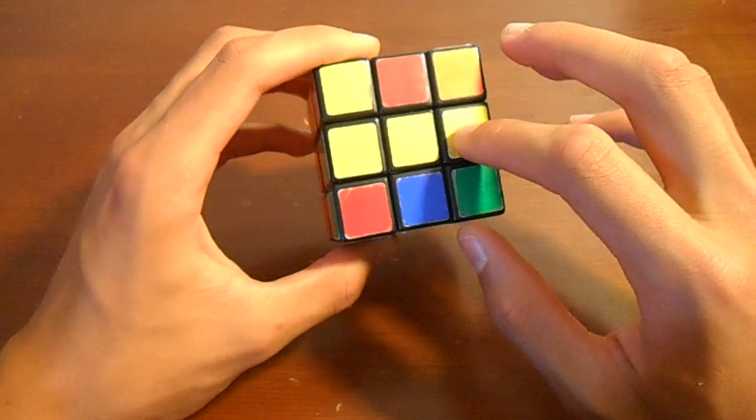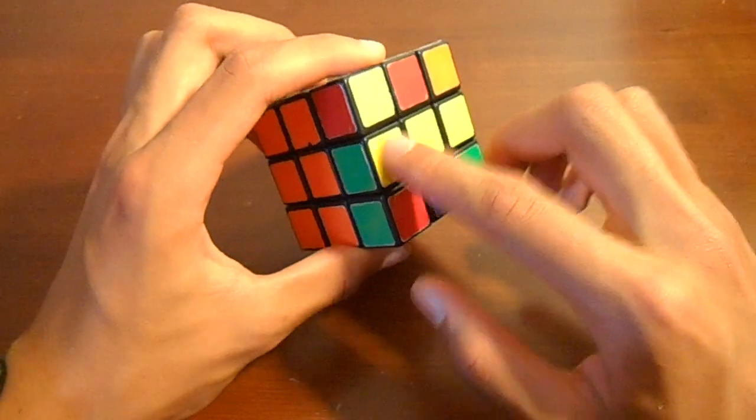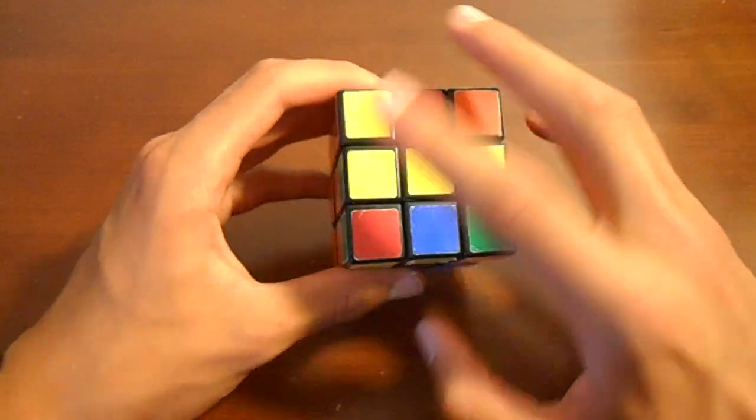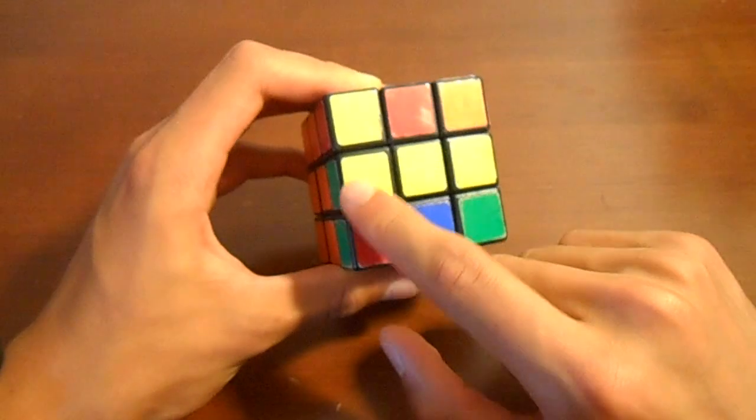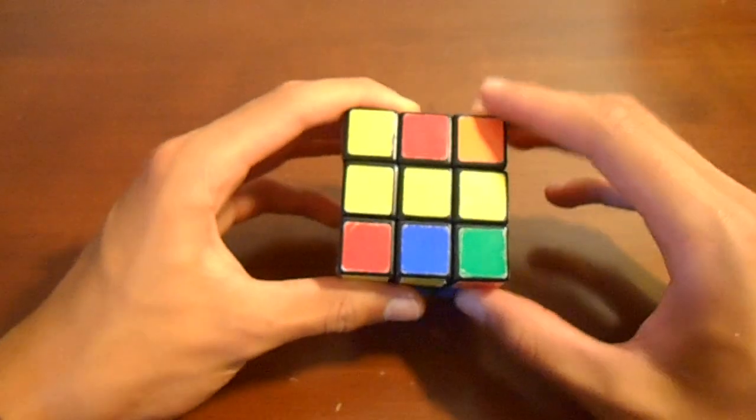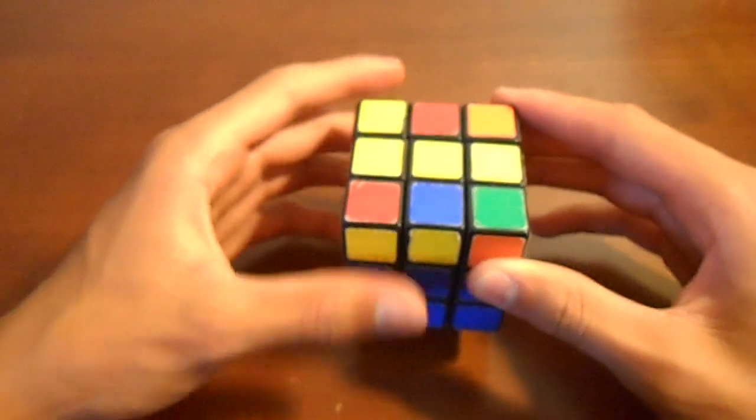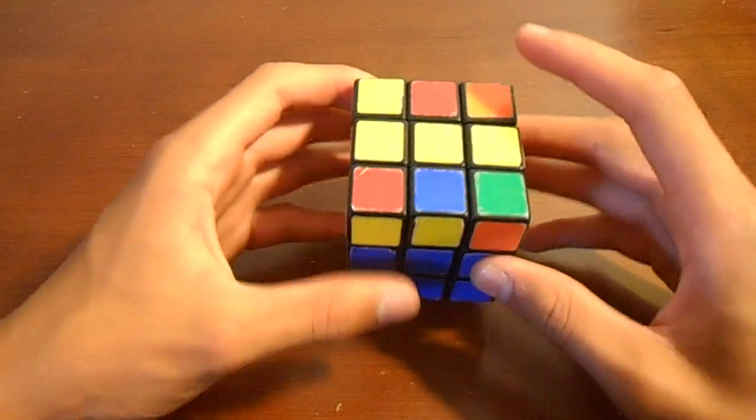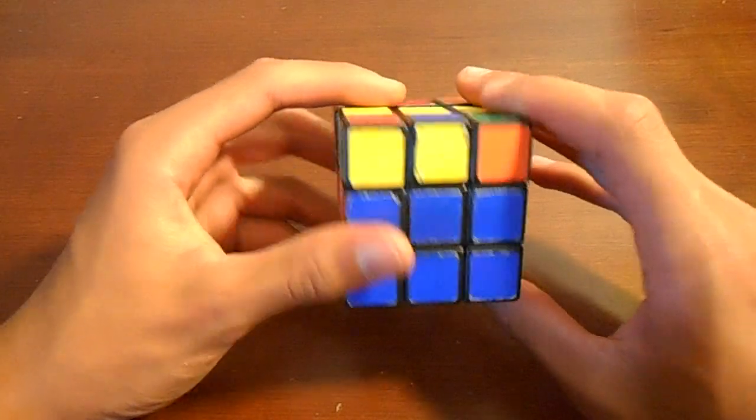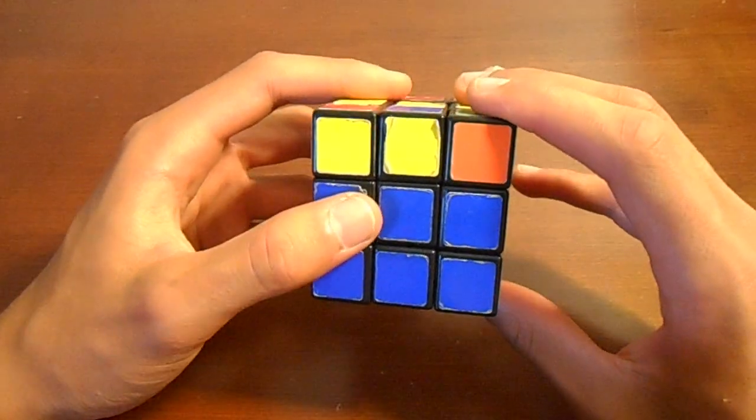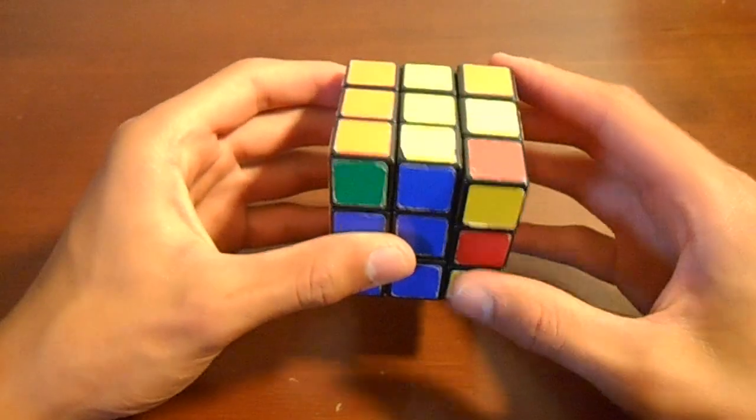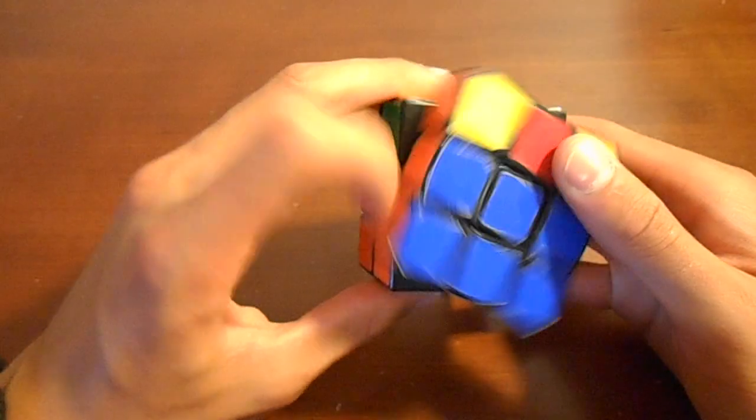So the first thing or should I say case is the horizontal line case as I like to call it. And I call it that because it looks like a horizontal line and also that's how you're going to hold the cube when you start the algorithm. So the algorithm goes like this. In cube notation it would be F, R, U, R prime, U prime, F prime.